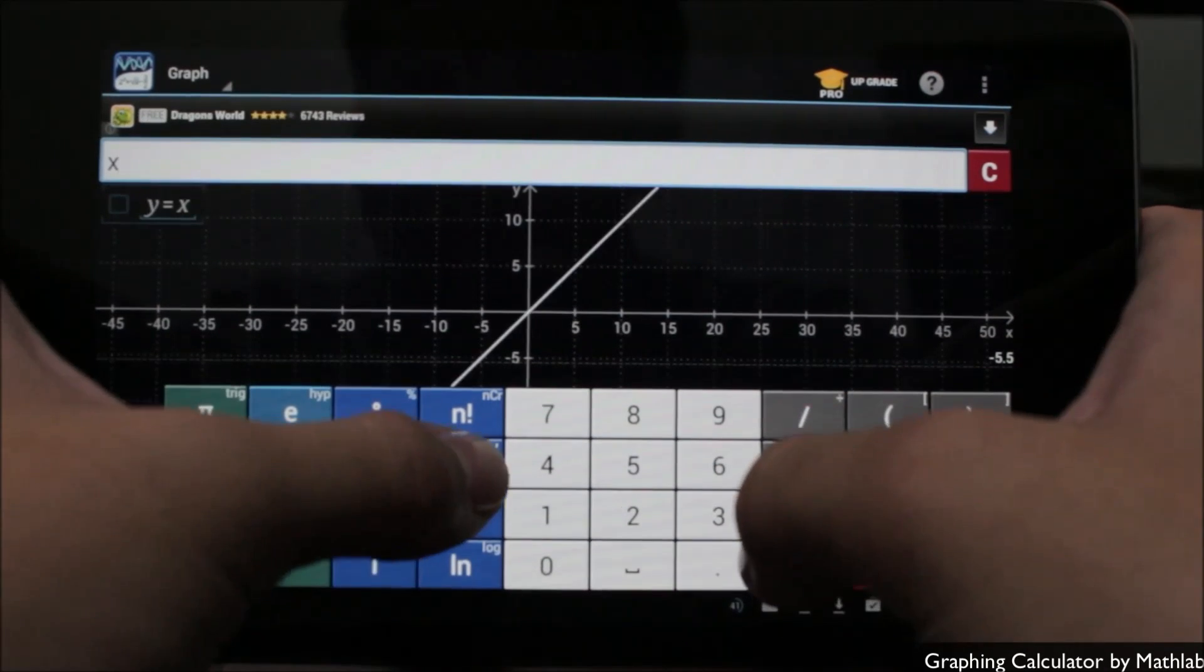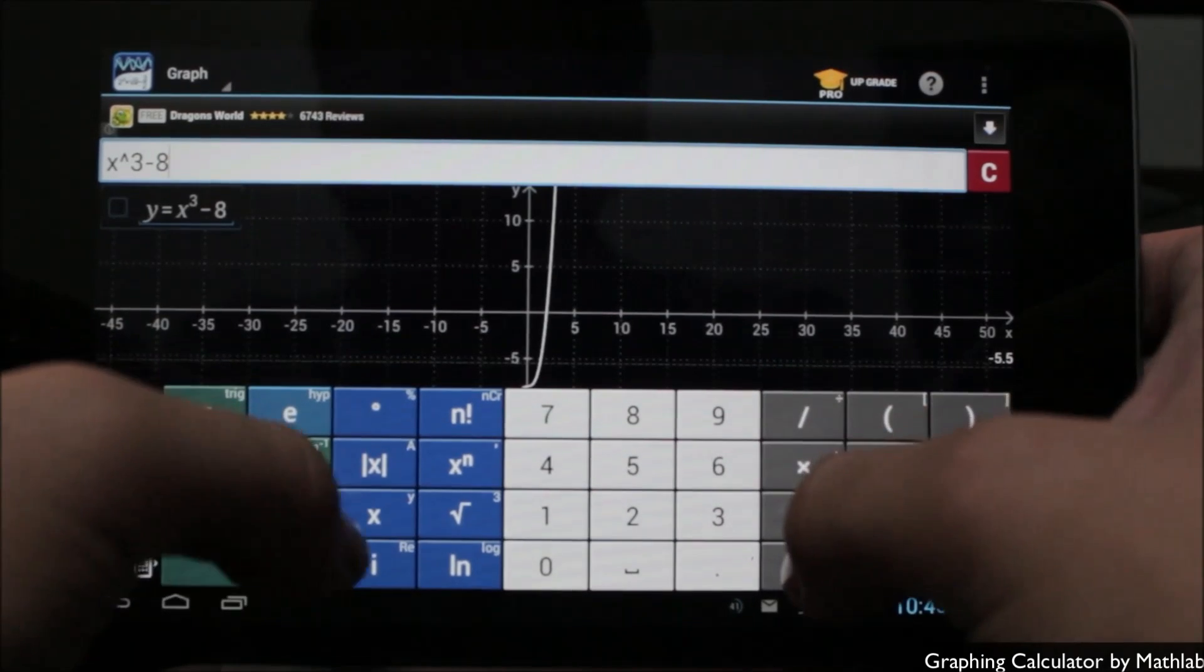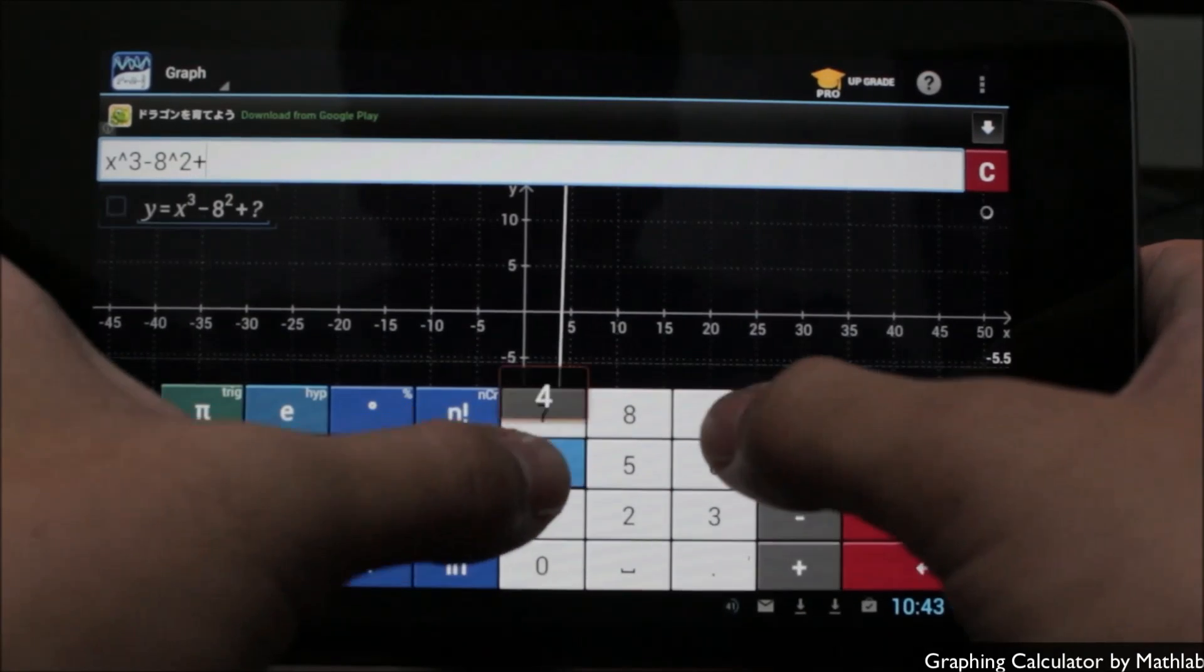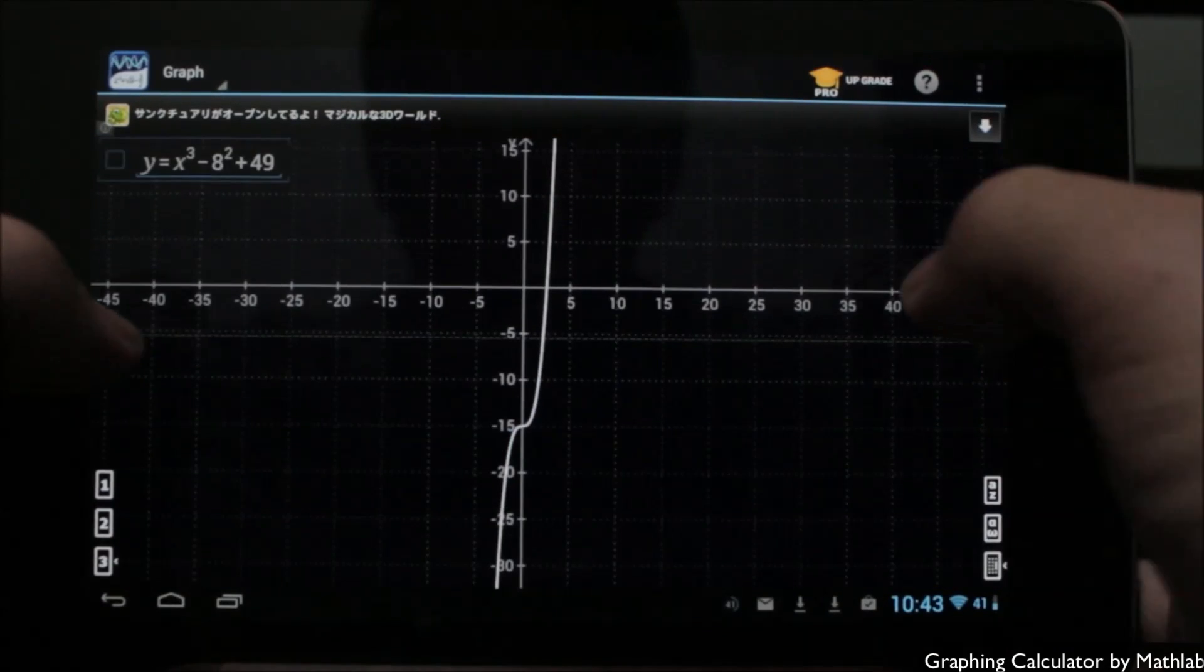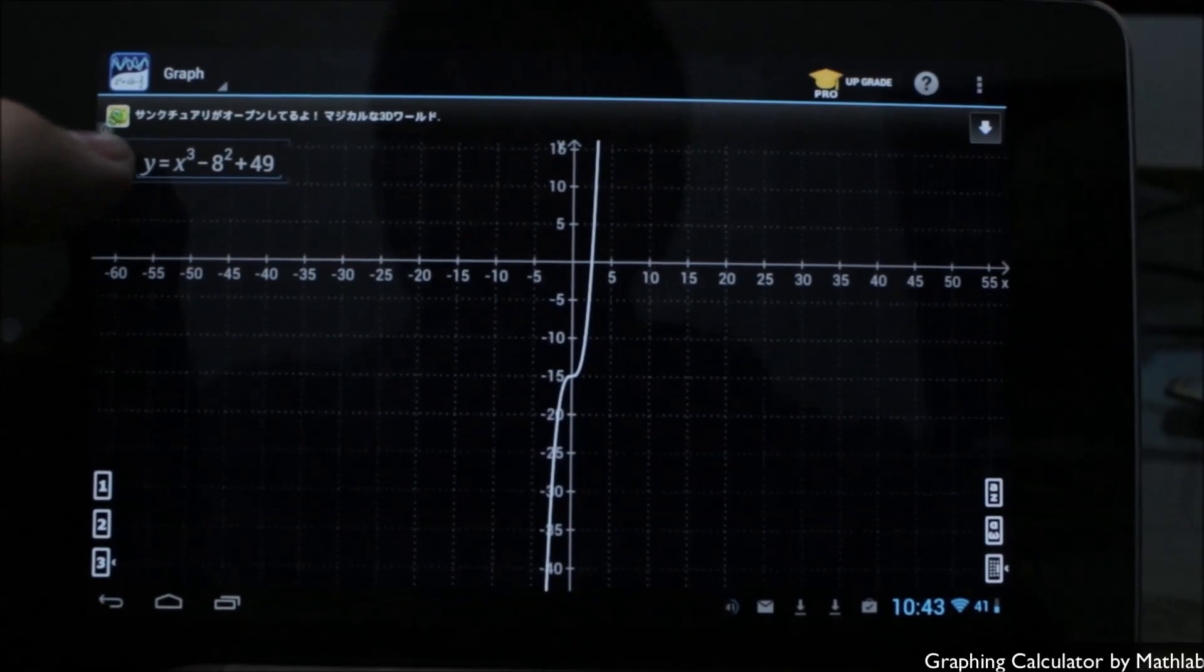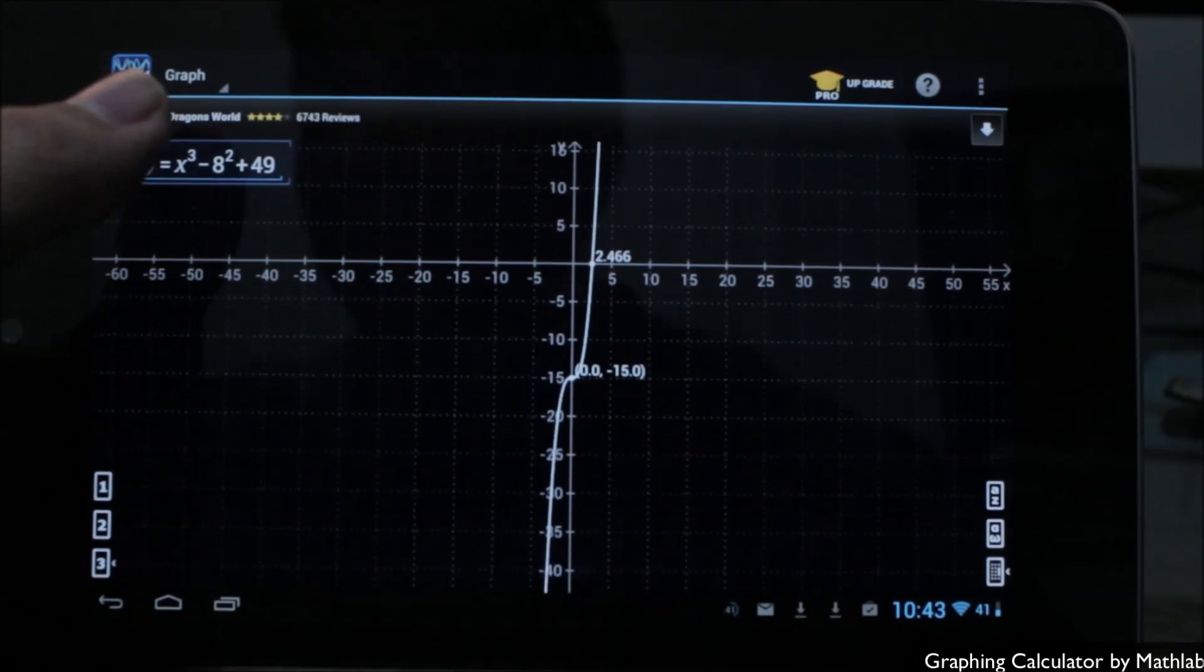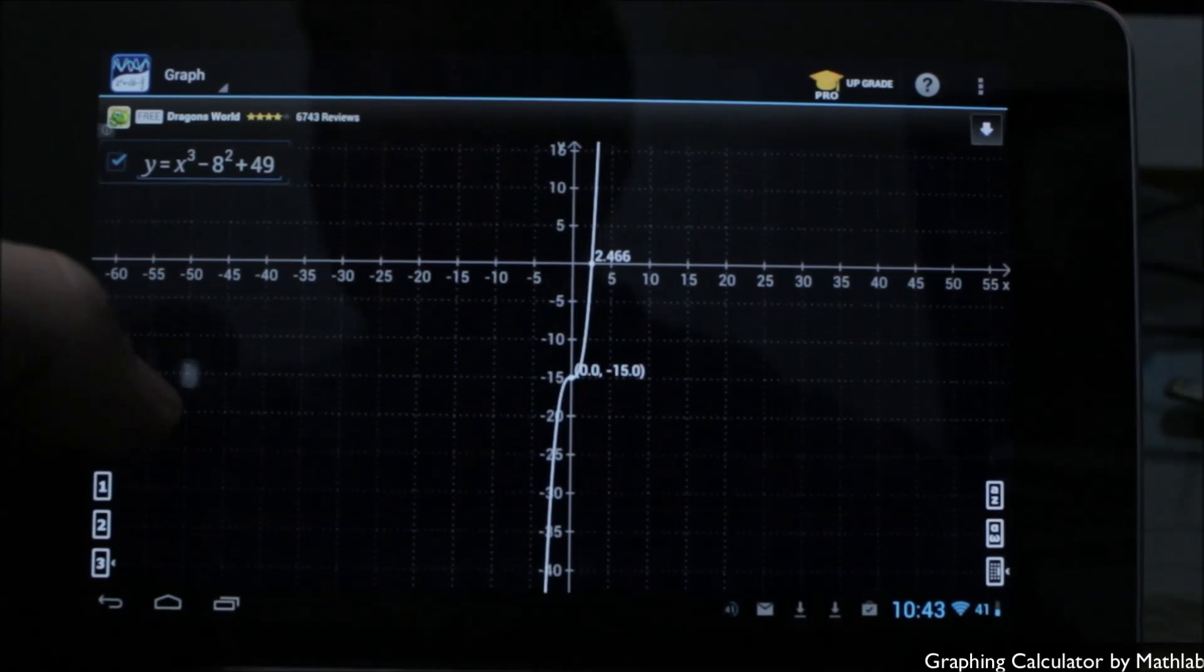Next up, let's look at a cubic equation. We'll go x to the power of 3 minus 8x to the power of 2 plus 49. Let that sit, and I'm going to hide the keyboard now so you can easily see it. By hitting this checkmark next to the equation in the top left, you can see it now shows the root of the function along with the point of inflection on the graph.